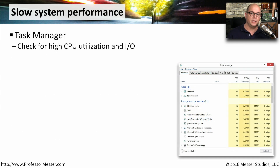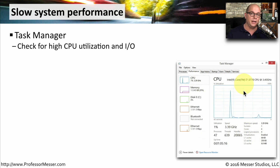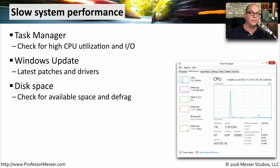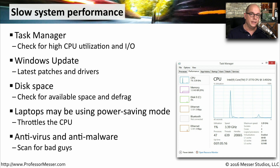If you find your system is performing slowly, the first place you should go is the Task Manager, which provides real-time views of CPU, memory utilization, network usage, and more. You can look for high CPU utilization or anything using a lot of disk or network access, and view performance graphically over time. Slow systems might also be caused by operating system issues, so running Windows Update is always a good idea. You might also want to check your drive space, as running low causes slowdowns. If you have a laptop, check whether it's running in a power saving mode, which makes the CPU run slower. And of course, run an anti-virus or anti-malware scan to check for malicious software.